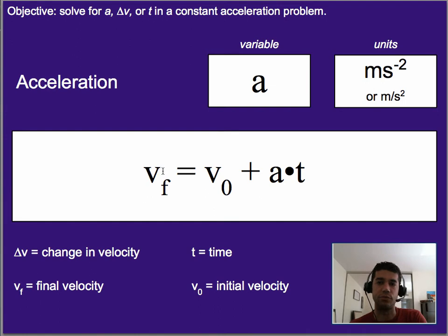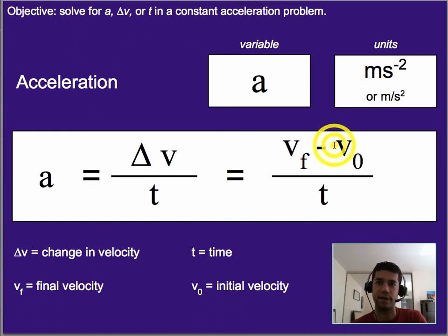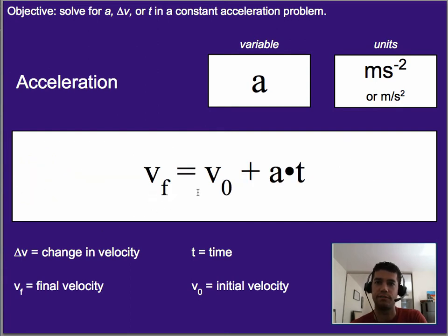Alternatively, you could reorient the equation vf minus v0 over t equals a into vf equals v0 plus a times t. If you don't know how to do this mathematically, ask your teacher. This is basically the same equation, but it's now written so that the final velocity is what's solved for. Sometimes people find this easier to remember, sometimes not. It just depends.